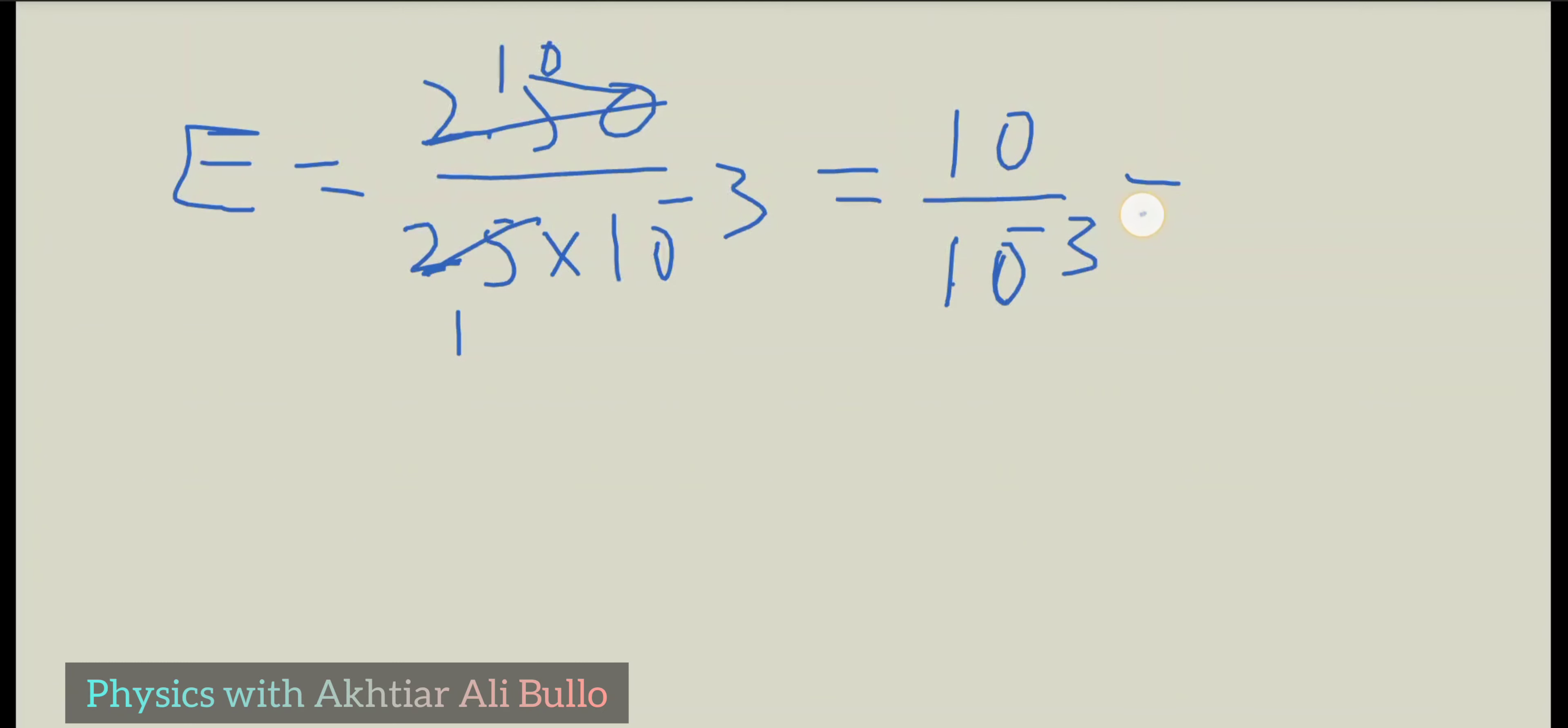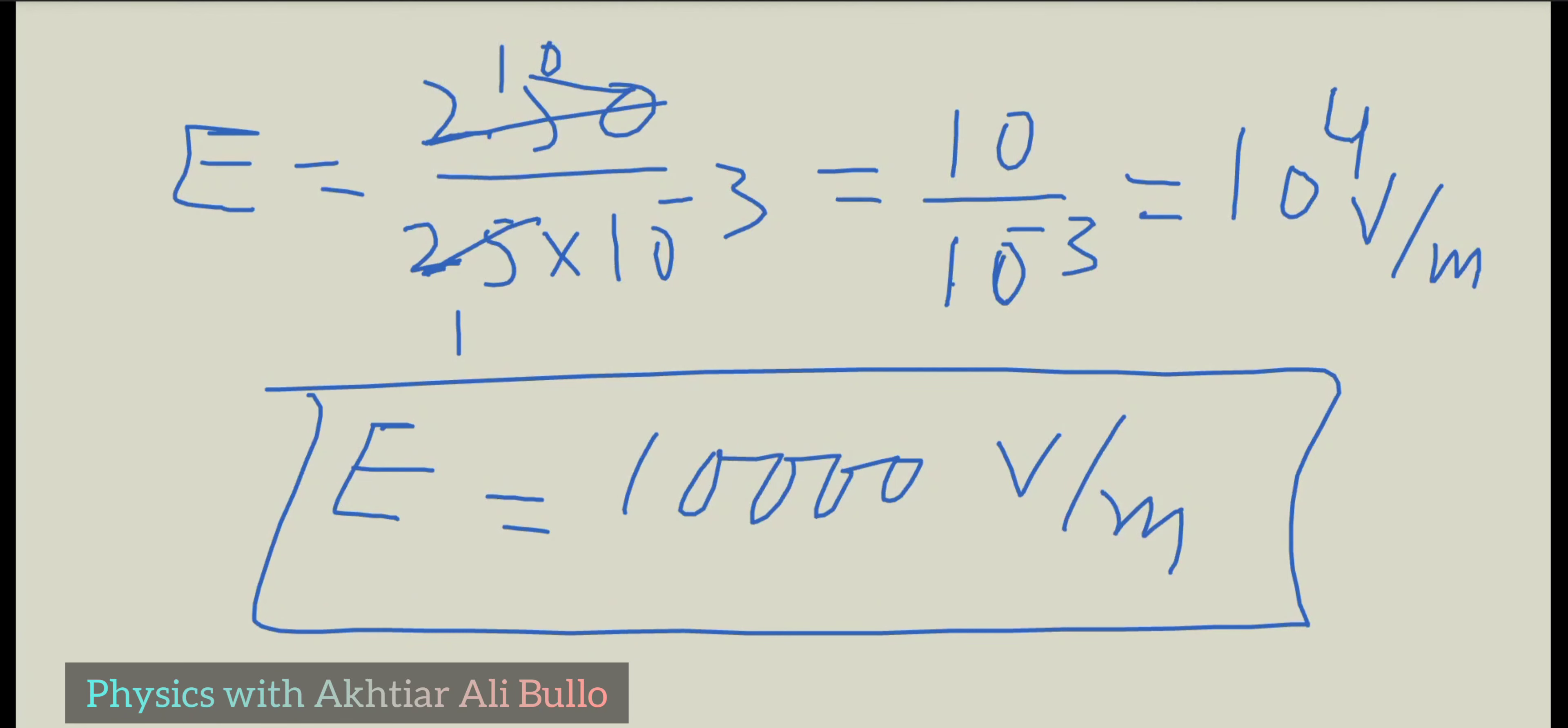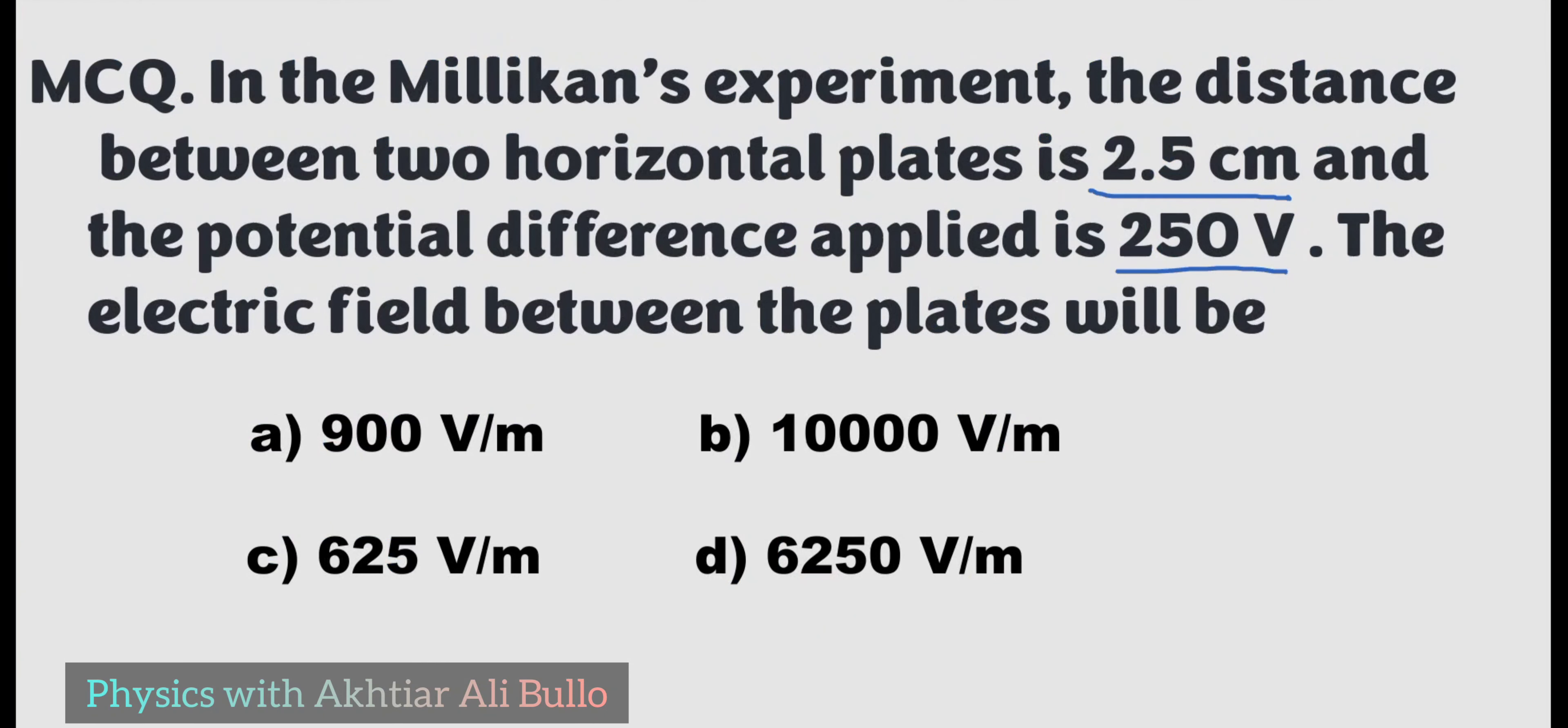This equals 10^4 volts per meter, which is 10,000 volts per meter. Therefore, the correct option is B: 10,000 volts per meter.